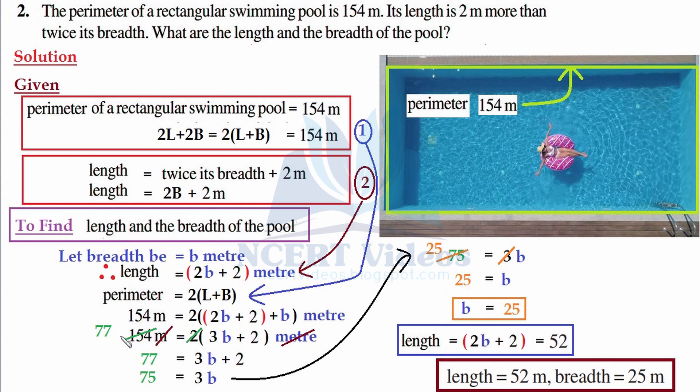So 77 minus 2—obviously we will not write reasons now because it is very much clear to you by now—so positive 2 becomes negative 2 and it gets subtracted with 77.